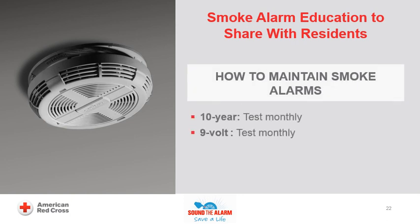The educator will share how to maintain smoke alarms. 10-year smoke alarms should be tested monthly and replaced every 10 years or earlier if needed. Smoke alarms with non-replaceable 10-year batteries are designed to remain effective for up to 10 years. If the alarm chirps warning that the battery is low, replace the entire smoke alarm right away. 9-volt smoke alarms should be tested monthly and have their batteries replaced at least once a year. If the alarm chirps, replace the battery right away. Follow the manufacturer's list of batteries on the back of the alarm, as the smoke alarm may not work properly if a different kind is used. Regardless of whether an alarm is hardwired, 10-year, or 9-volt, all smoke alarms should be tested monthly and replaced after 10 years.